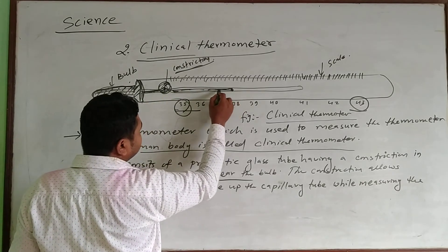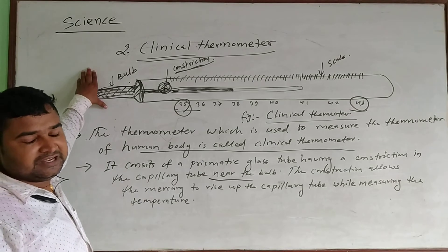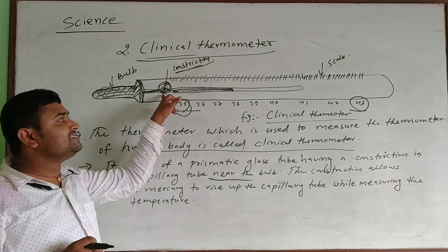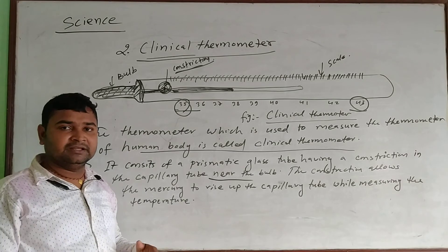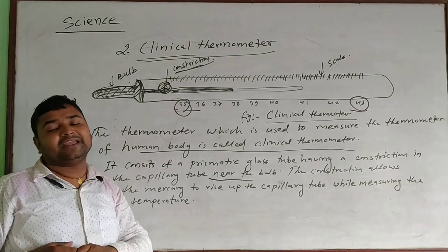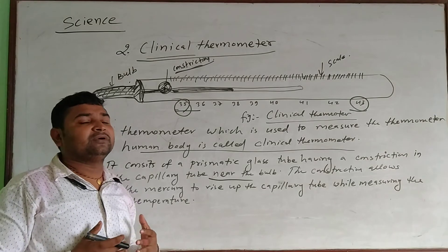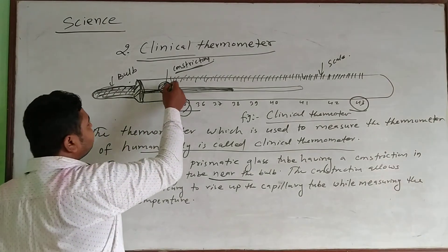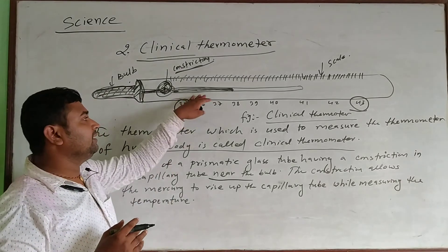When the cylindrical bulb comes into contact with the heat of the body, the mercury level rises. Due to the constriction present in the capillary tube, the mercury level does not fall down immediately. This gives an accurate measurement of the human body temperature. The normal temperature of the human body is 37 degree Celsius, or 98.6 degree Fahrenheit. The constriction is kept in the clinical thermometer because it does not allow the mercury level to fall down immediately in the capillary tube.